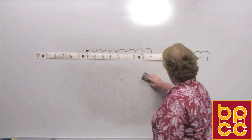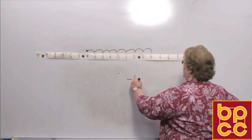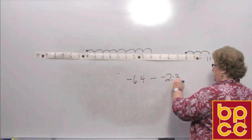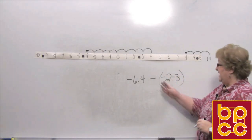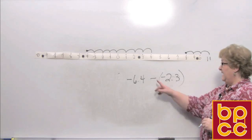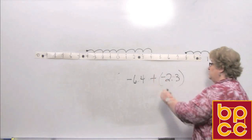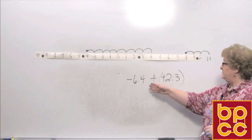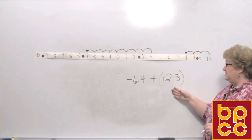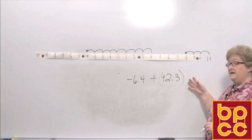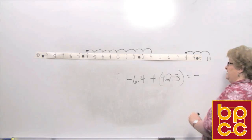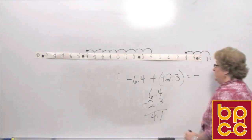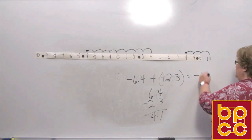Let's try negative 6.4 minus a negative 2.3. I don't subtract — I keep the first number, change the subtract sign to addition, and change the next number to its additive inverse, giving negative 6.4 plus a positive 2.3. You can tell we have more negative than positive, so the answer will be negative. Taking the difference: 6.4 minus 2.3 gives us negative 4.1.